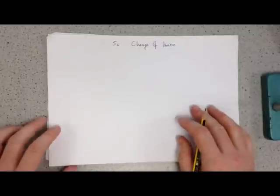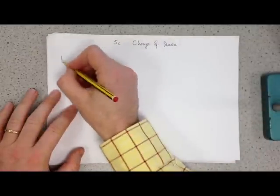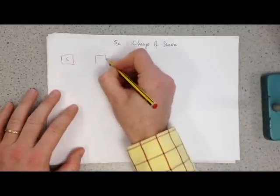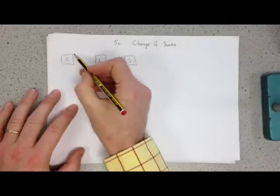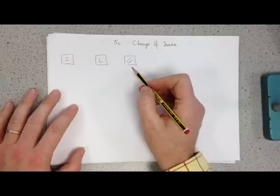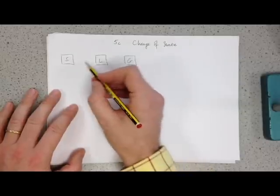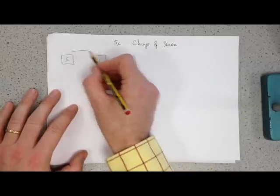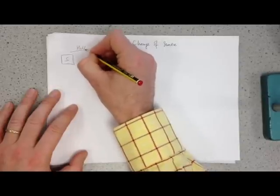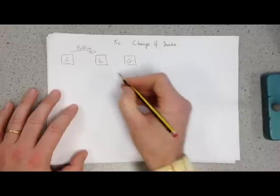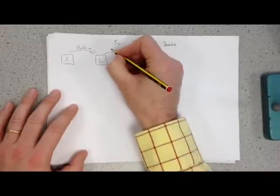5c, changes of state. This is all fairly straightforward stuff that you've probably known for years. Solid, liquid, gas. You need to know the words to go from one to the other. So solid to liquid, for example, ice going to liquid water is obviously called melting.